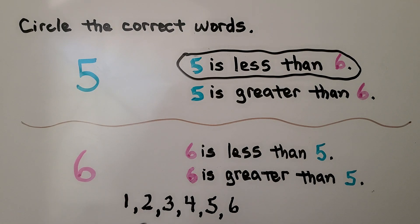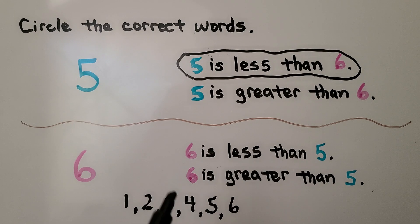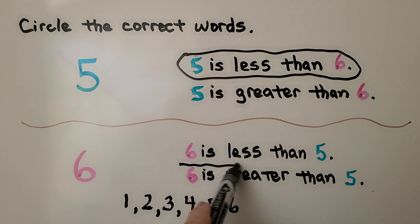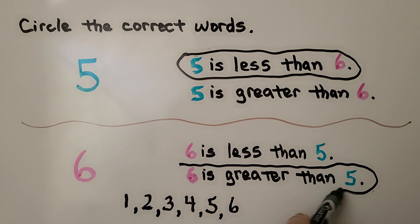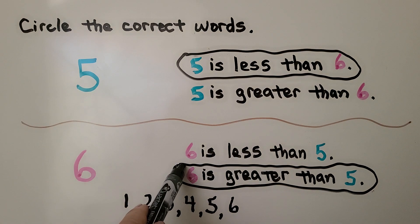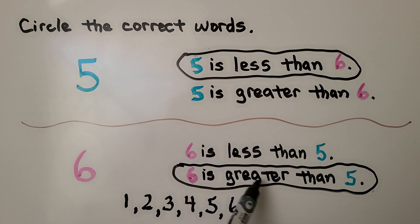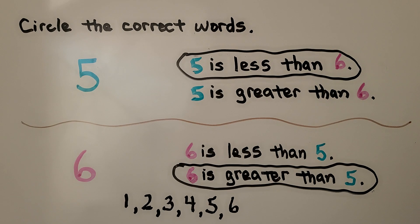Is six less than five, or is it greater than five? We see in counting order that six comes after. If you said six is greater than five, you're right. We can circle these words: six is greater than five. By thinking of counting order, we can find which number is less or which number is greater.